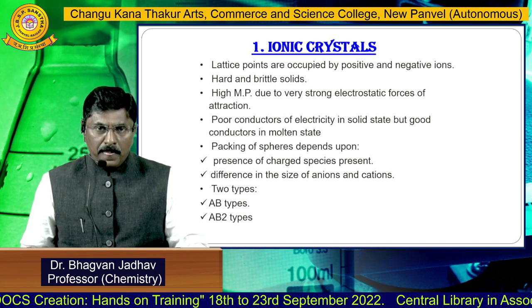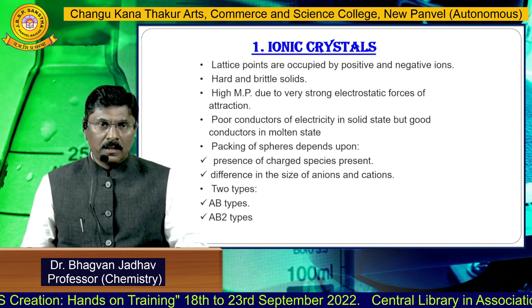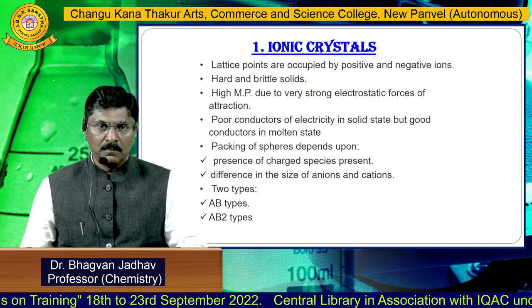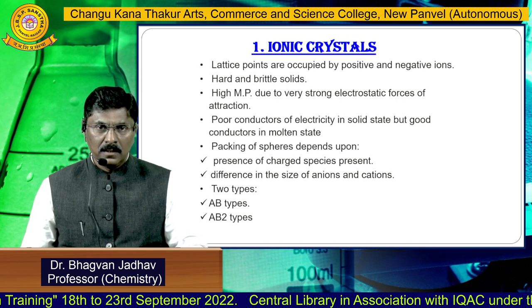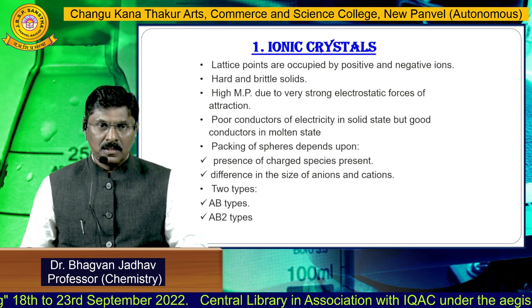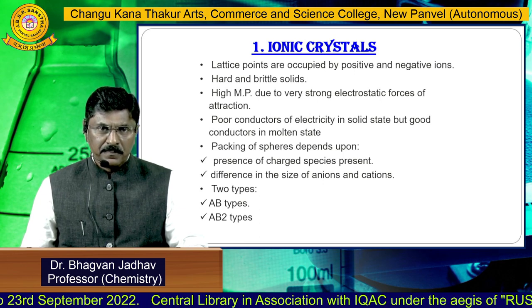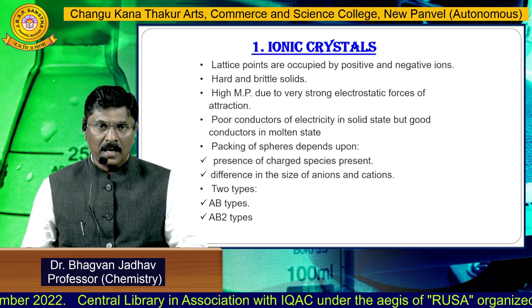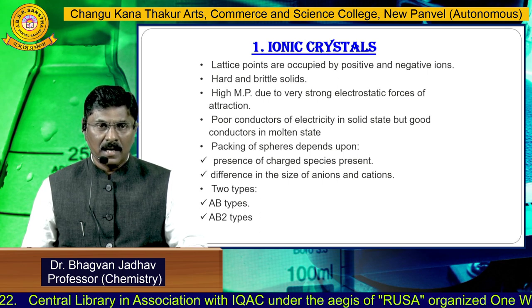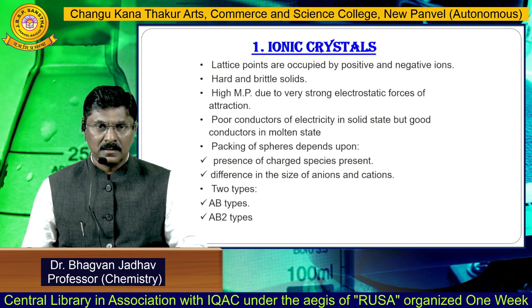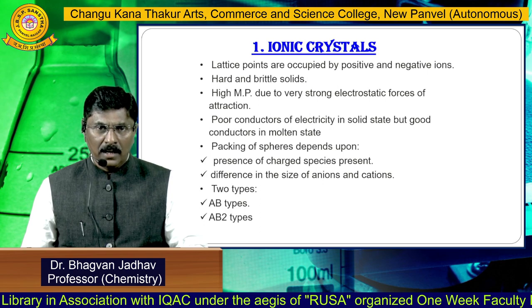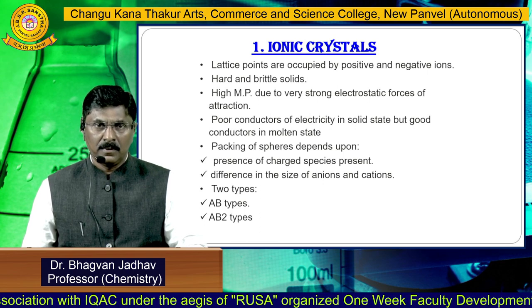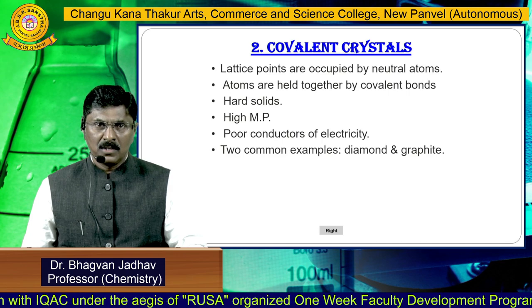Ionic crystals are poor conductors of electricity in the solid state, but are good conductors in the molten state. The packing of spheres depends upon the presence of charged species and the difference in the size of the anions and cations. There are two types of ionic crystals: AB type and AB₂ type.